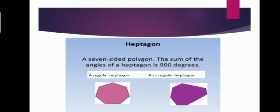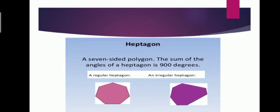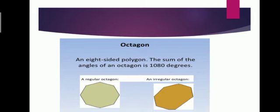After hexagon, heptagon. A heptagon is a seven-sided polygon. The sum of the interior angles of a heptagon is equal to 900 degrees. These are the regular heptagon and this is the irregular heptagon.